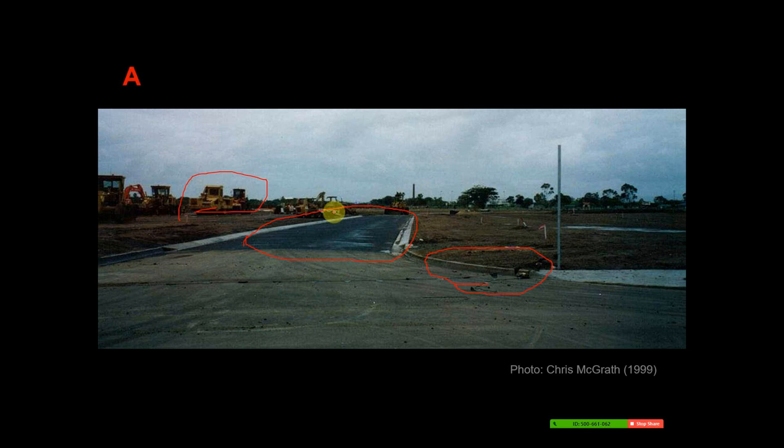Another company was delivering the bitumen. Before you lay bitumen — that sticky tarry stuff — you put down what's called bitumen primer. As I understand it, it's a 50/50 mix of bitumen and diesel, meant to make the bitumen less viscous so it can soak into the soil. You spray it on the soil so that when you lay the bitumen, it sticks better.